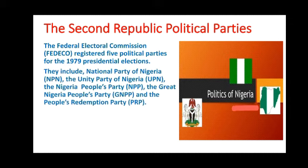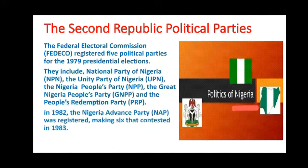However, for the 1983 general elections, FEDECO also registered the NAP — that is the Nigeria Advanced Party — in 1982, making it six political parties that contested the 1983 general elections. Let's take a look at these parties one after the other.